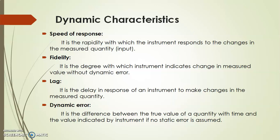The next characteristic is Dynamic Error. It is the difference between the true value of the quantity varying with time and the value indicated by the instrument, if no static error is assumed. Static error is the difference between the true value and the measured value. Dynamic error is similar, but the measured quantity changes with respective time, and static error is assumed to be zero.